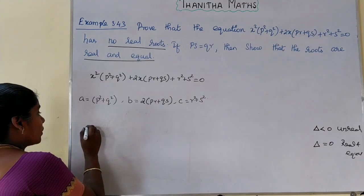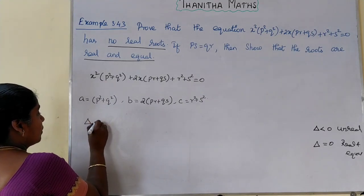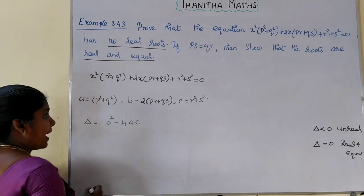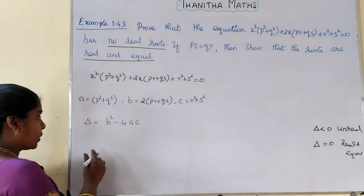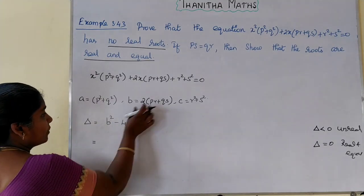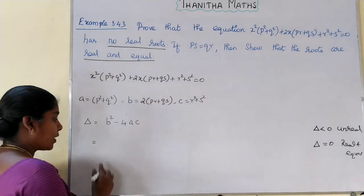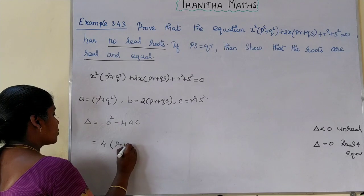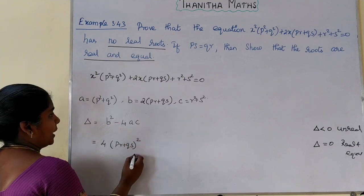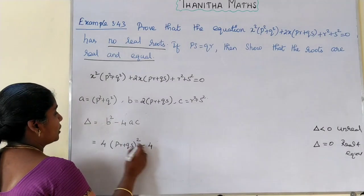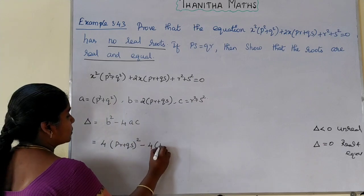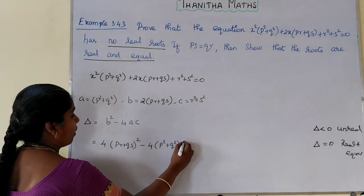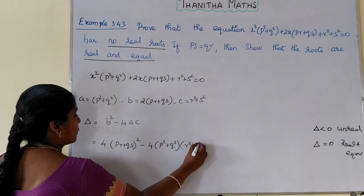Now the discriminant delta equals b²-4ac. We substitute: b = 2(pr+qs), so b² = 4(pr+qs)², minus 4 times a = p²+q², times c = r²+s².